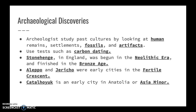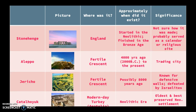These are different archaeological sites that archaeologists study to know more about the way people used to live. Stonehenge is in England and began in the Neolithic era, finished in the Bronze Age. It was a circle of stones probably used as a calendar or a religious site for pagans. Aleppo and Jericho are located in the Fertile Crescent and are among the earliest cities in that area. Jericho is specifically known for its defensive walls that were defeated by the Israelites. Catalhöyük is an early city in Anatolia and one of the oldest and best-preserved Neolithic settlements we have.